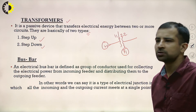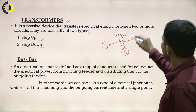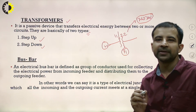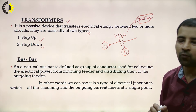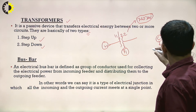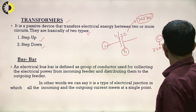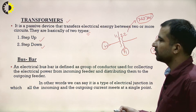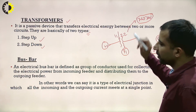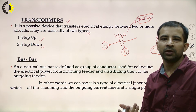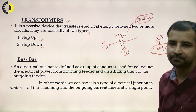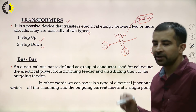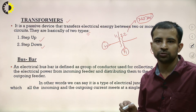At the distribution end, a step-down transformer is used, because high voltages like 765 kV are not required by the consumer. The consumer requires 220 V or 440 V, not kilovolts. So at the generation end we use a step-up transformer, and at the distribution end we use a step-down transformer.